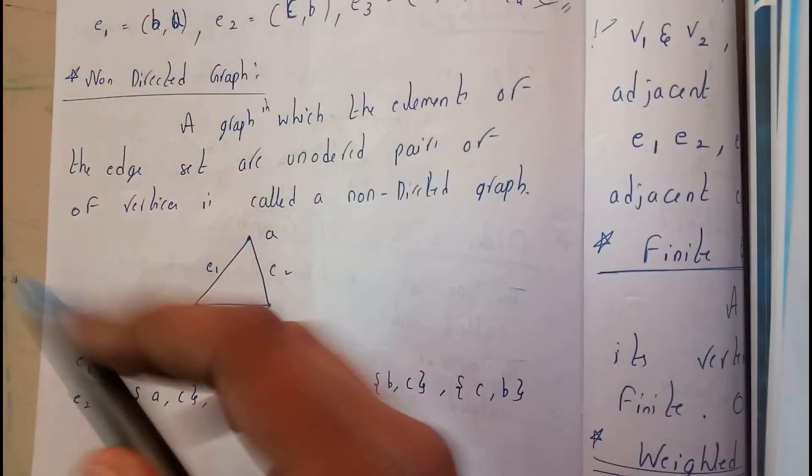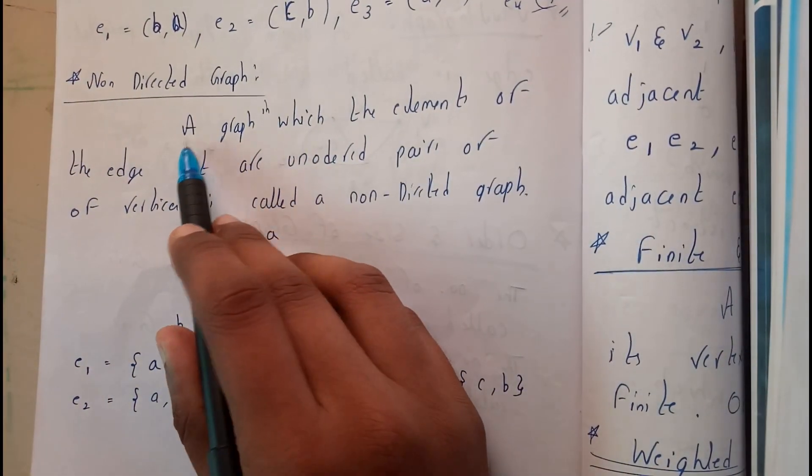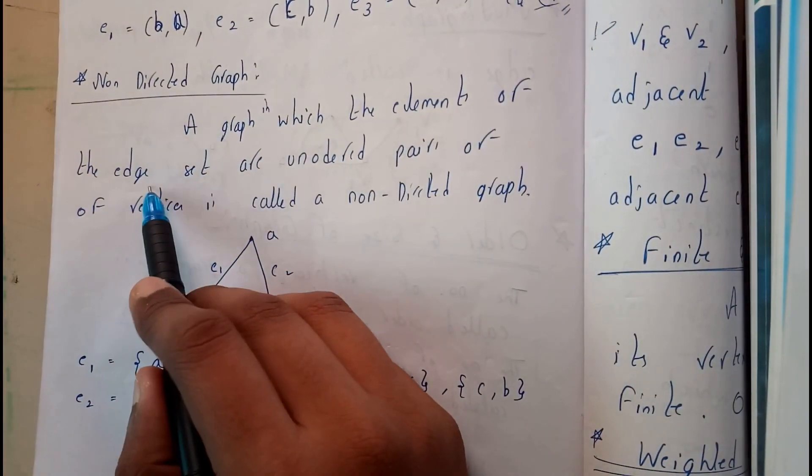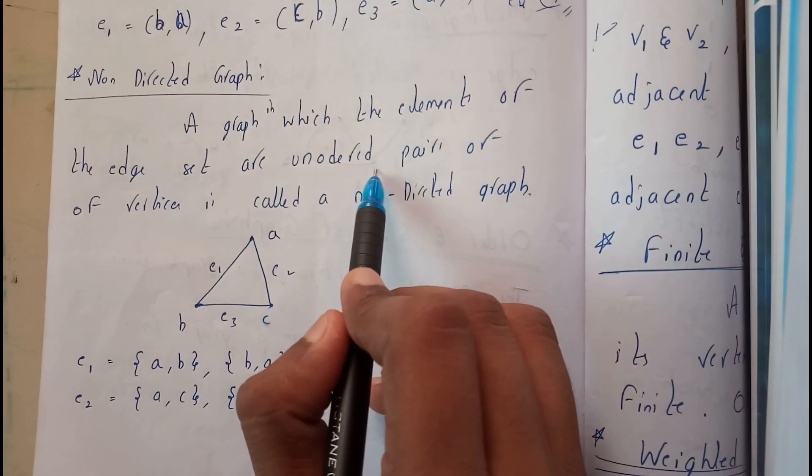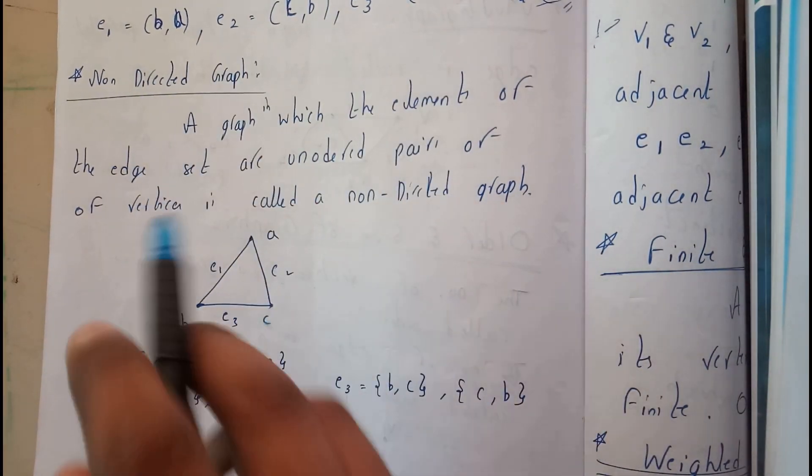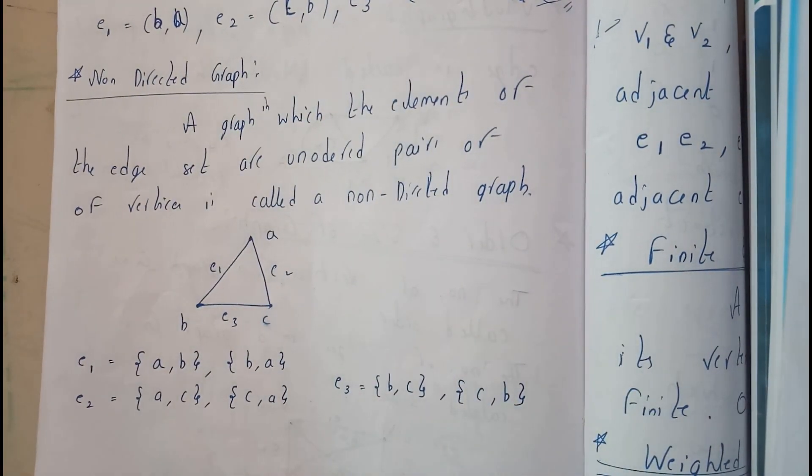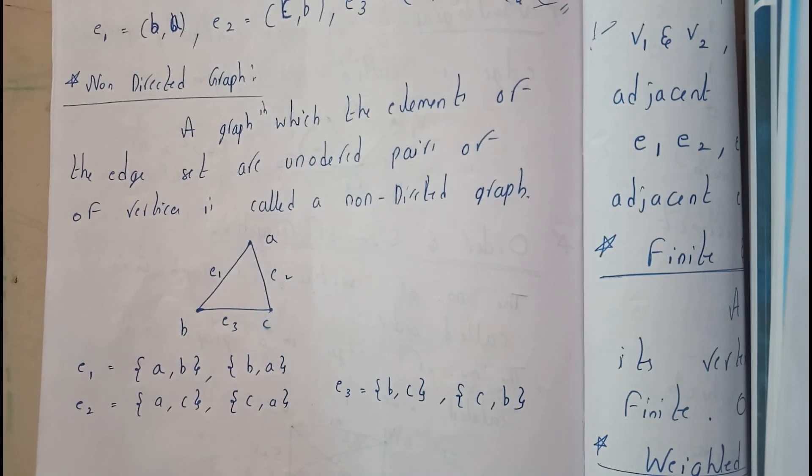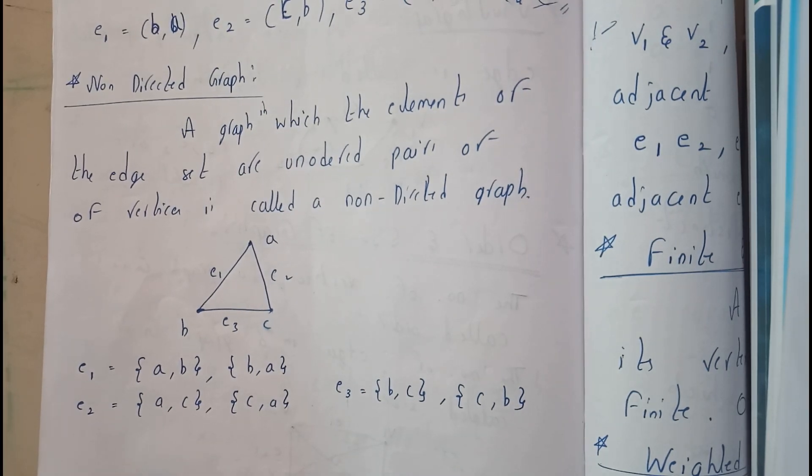Okay, in technical language we will be saying a graph in which the elements of the edge set are unordered pairs. Here previously we've seen they have ordered pairs in directed graphs, but whereas in non-directed graphs they do not have any ordered pairs of vertices. Hence it is a non-directed graph.